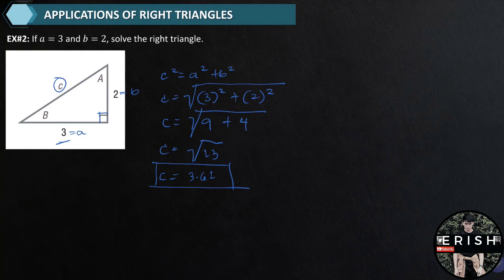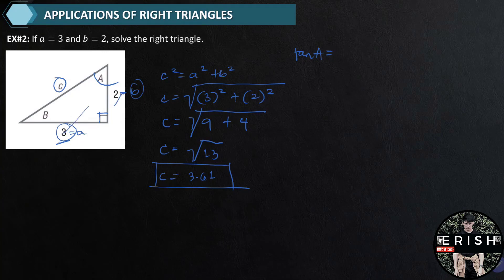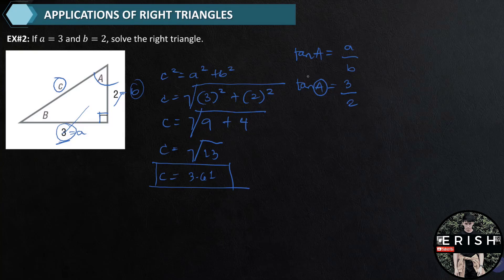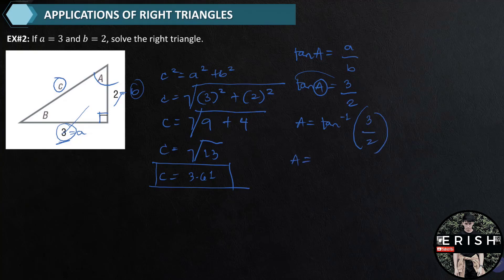To find angle A, we use the tangent function. Tangent A is equal to opposite over adjacent, which is A over B — that is 3 over 2. To solve for angle A, we transfer the tangent to the right side of the equation, making it arctangent (tangent raised to negative 1). So angle A equals arctangent of 3 over 2. By calculating, angle A is equal to 56.3 degrees.